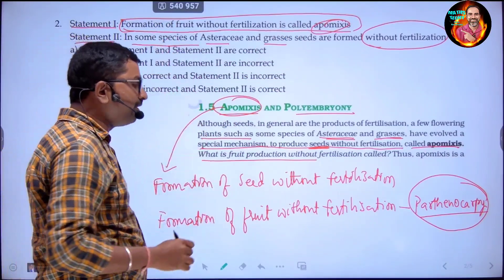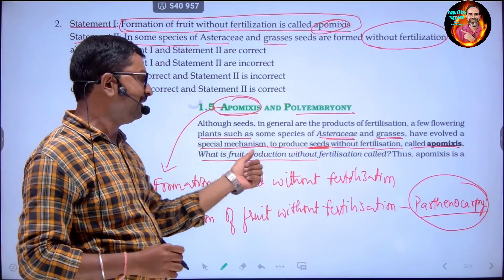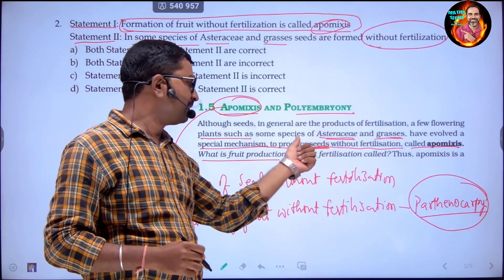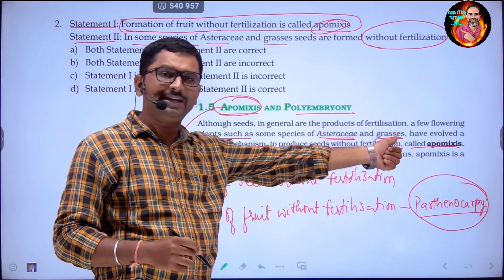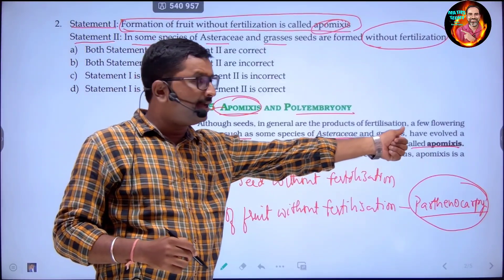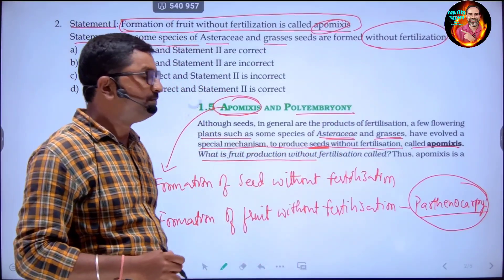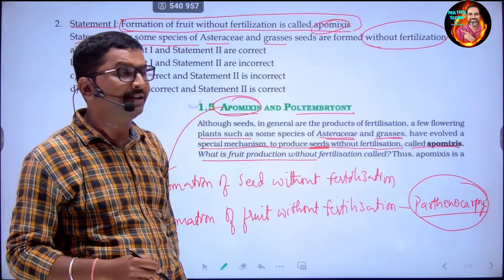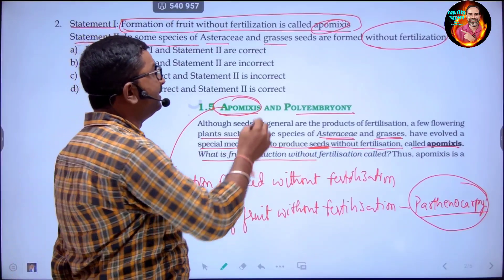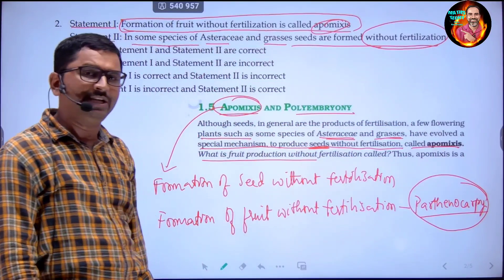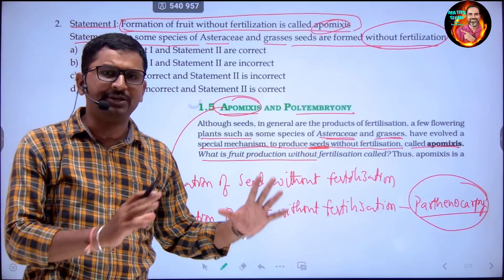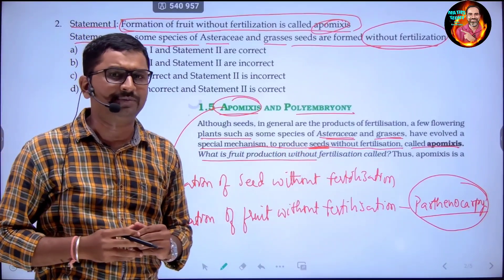Statement two states that in some species of Asteraceae and grasses, seeds are formed without fertilization. This is the correct statement.